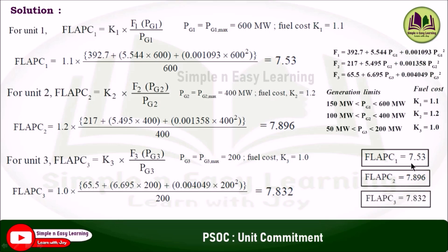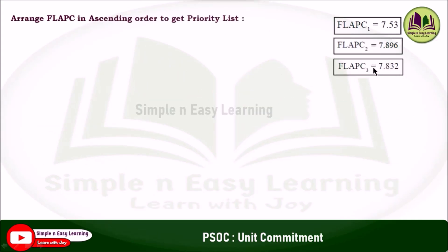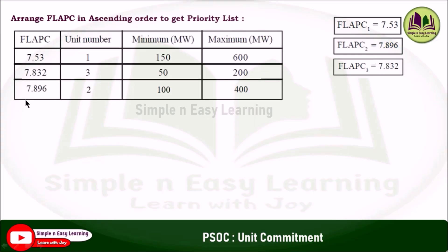So FLAPC_1 is 7.53, FLAPC_2 is 7.896, and FLAPC_3 is 7.832. Considering these three values, arrange the FLAPC in ascending order to get the priority list. In ascending order: first 7.53, then 7.832, then 7.896 — meaning unit 1 is first priority, unit 3 is second, and unit 2 is third.